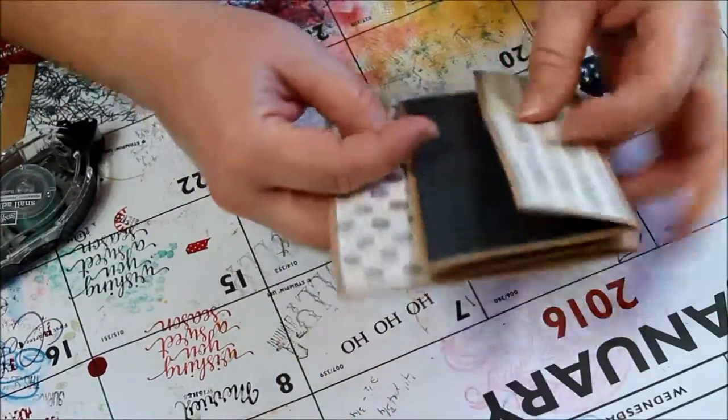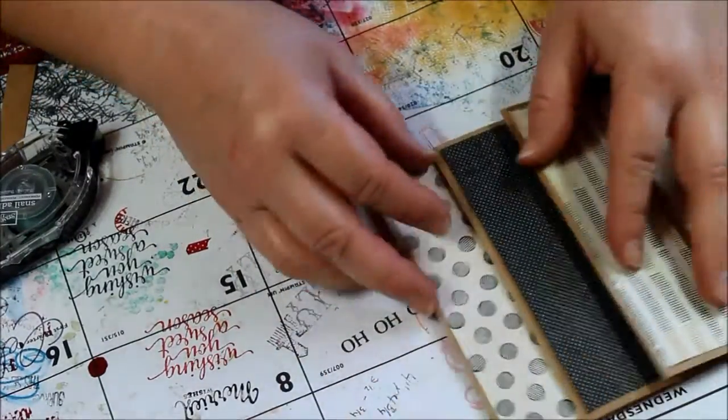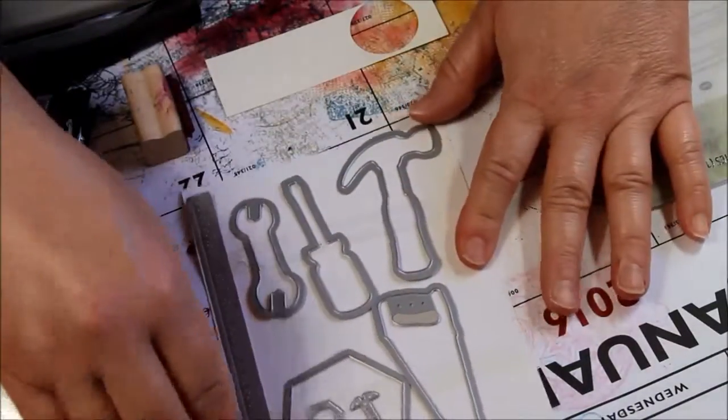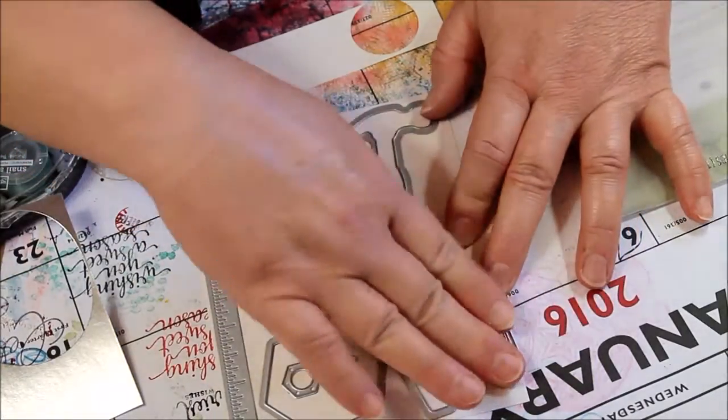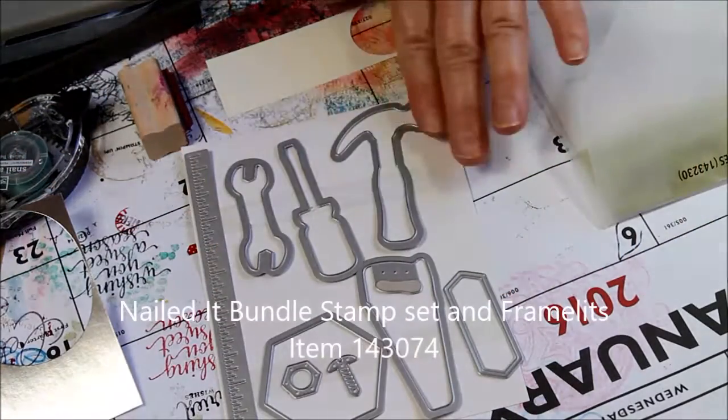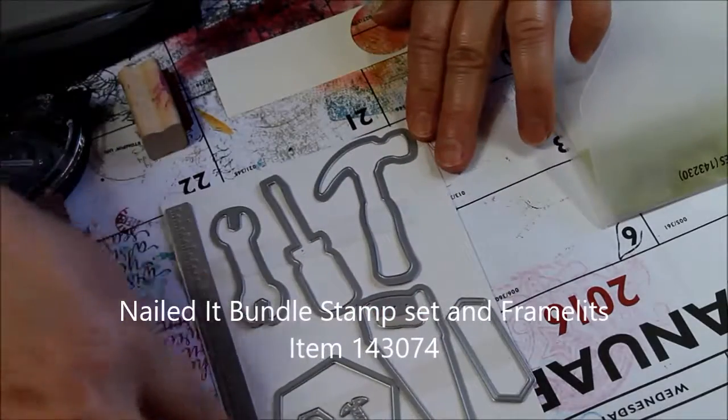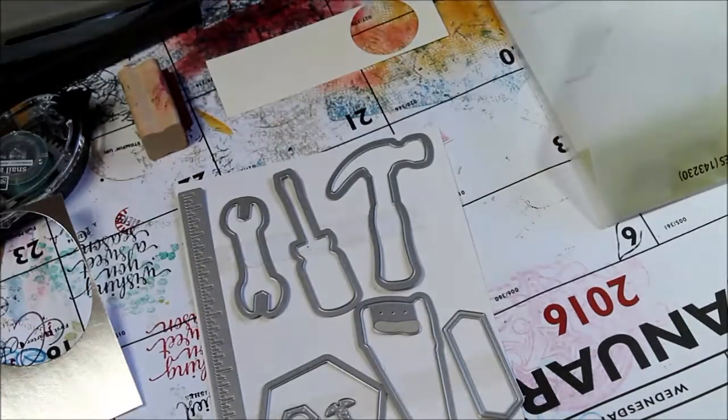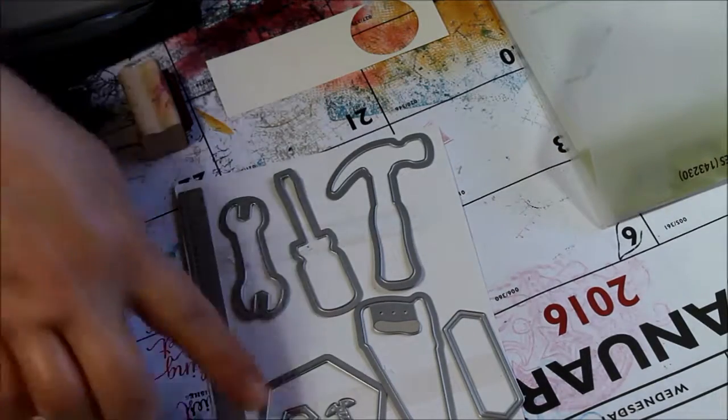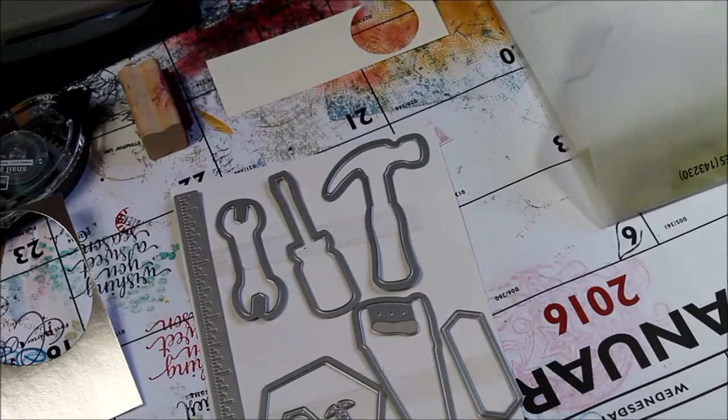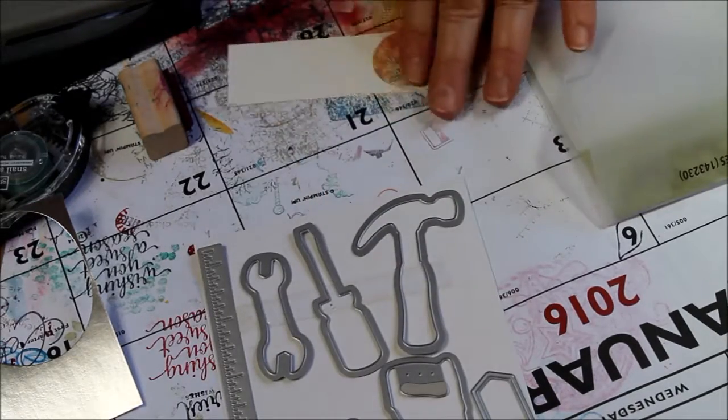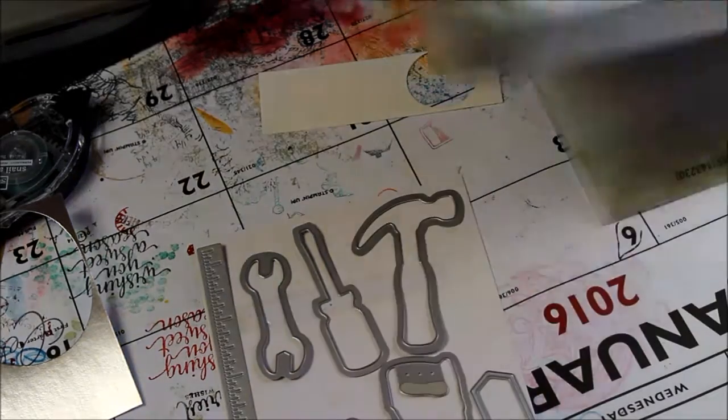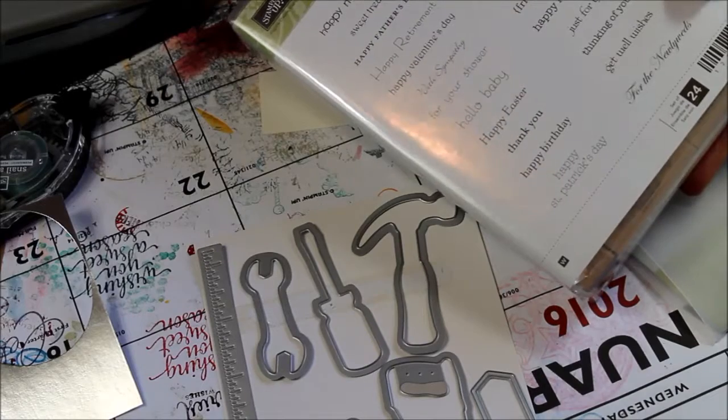Now, for our design for this card, I'm actually going to make it a birthday card. Now, this is the Build It Framelits that you can buy in a bundle with the Nailed It stamp set. Aren't these awesome? Tape measure, you could use that for school projects. Oh, I love those little nuts and the screw. So, we are going to do this as a Happy Birthday set.